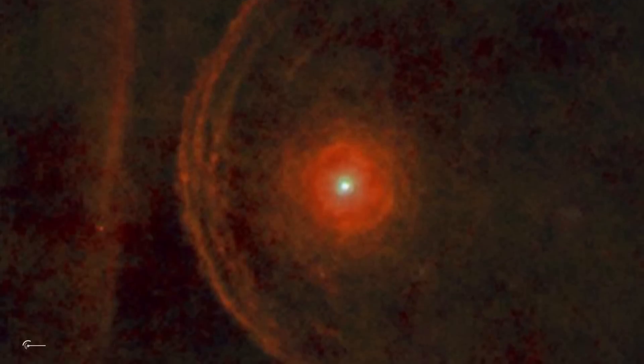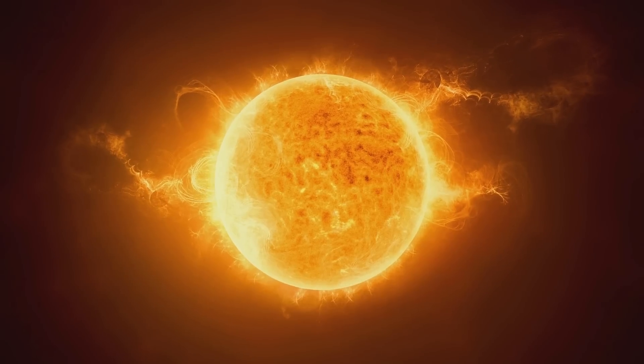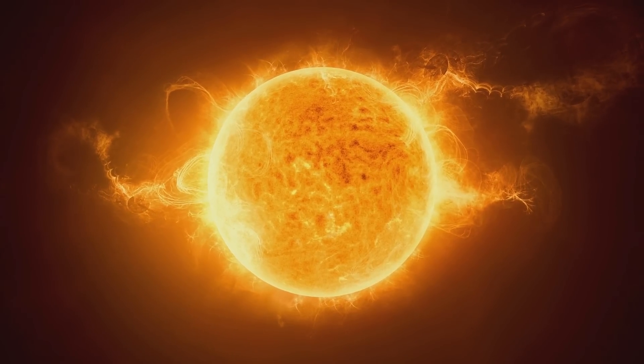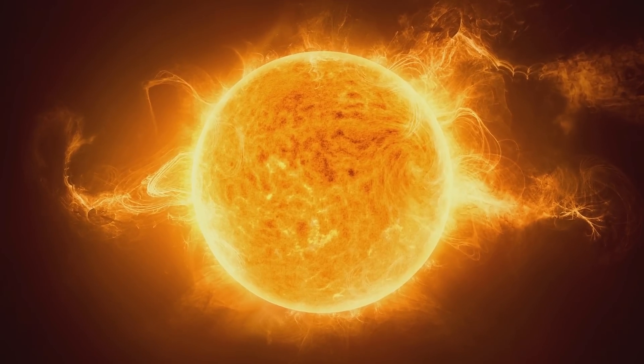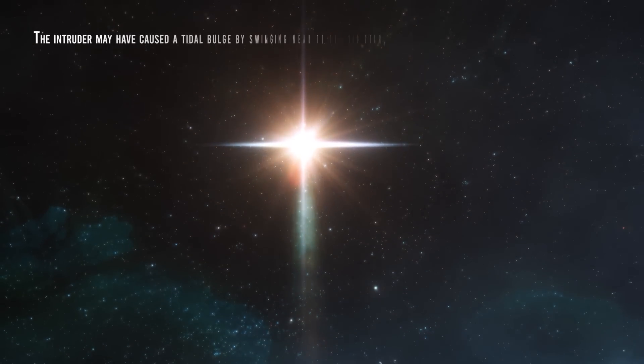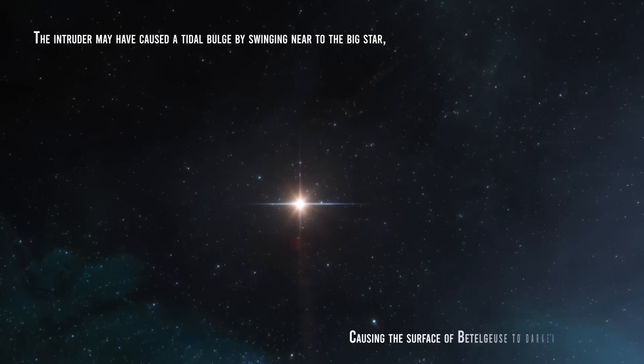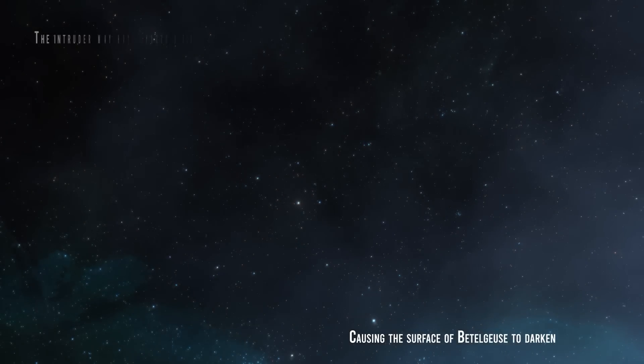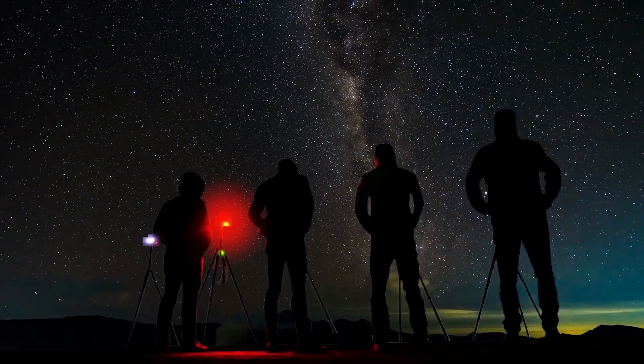The star Betelgeuse faded by roughly 60% in late 2019. While no one can tell for certain what caused the emission from the star, fresh studies revealed that a roaming companion may have had a role. The intruder may have caused a tidal bulge by swinging near to the big star, causing the surface of Betelgeuse to darken. While this scenario cannot account for the whole amount of dimming seen, it may have had additional impacts on the star that exasperated the situation, according to researchers in a recent report.